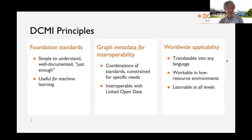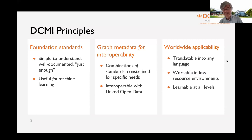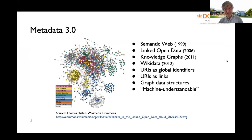Let me briefly talk about the DCMI principles. Dublin Core has always been a foundational standard — very simple to understand, well documented, and increasingly useful for machine learning. The Dublin Core terms and community contribute to graph metadata for interoperability. It's a combination of a standard and constraints for specific needs, very interoperable with linked open data, with worldwide applicability, translatable into any language, and workable in very low-resource environments.